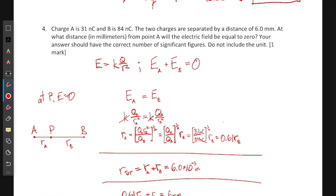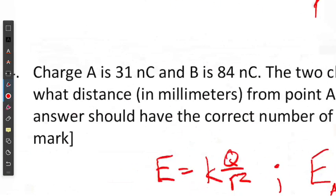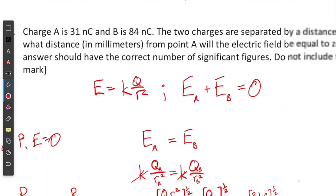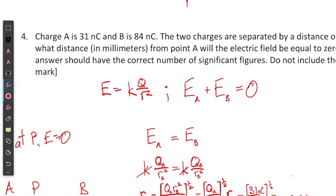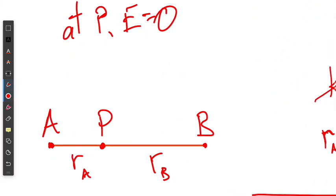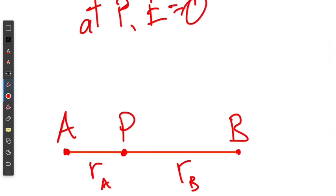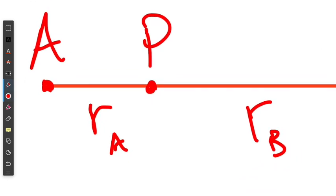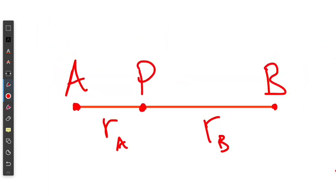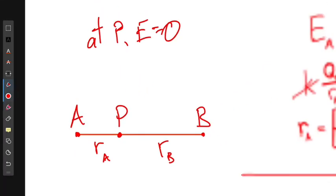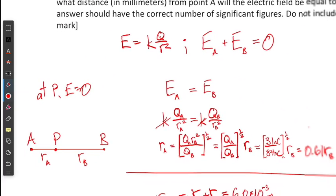Number four: charge A is 31 nanocoulombs and charge B is 84 nanocoulombs. If you're not sure what to do with the nano prefix, it's listed in the beginning of your data booklet. We need to find the point P where the electric field equals zero. I've drawn a diagram showing points A, P, and B, along with distances r_A and r_B — the distances from A to P and from B to P.